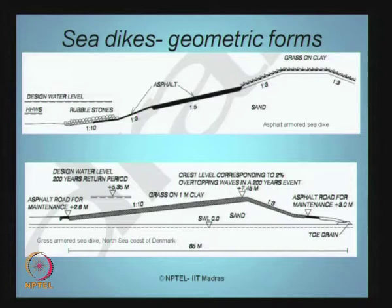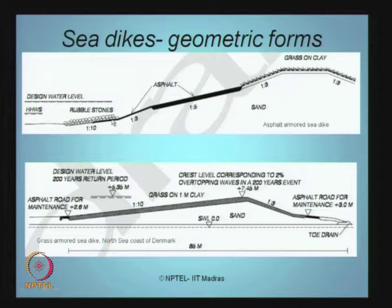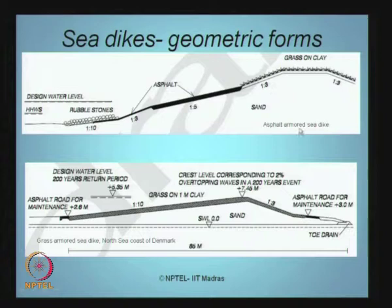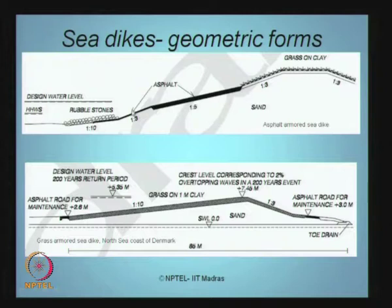Different geometric forms of sea dikes are shown here. For the design water level, the slope is initially as gentle as 1:10, then raises to 1:3, 1:5, and further 1:3, then the crust and 1:3. The upper crust uses grass on clay to armor the dike material. For a slope of 1:5, asphalt lining is applied to prevent surface run-up. Rubble stones are placed at the entry level to minimize erosion.